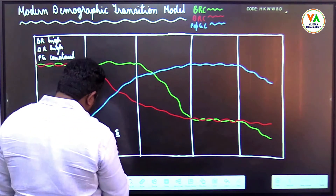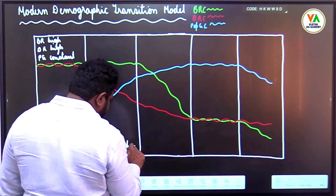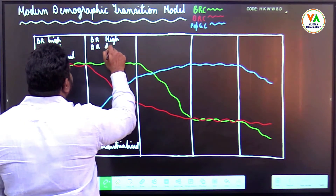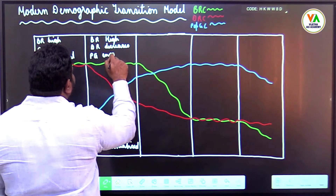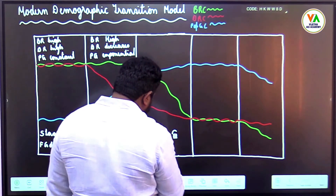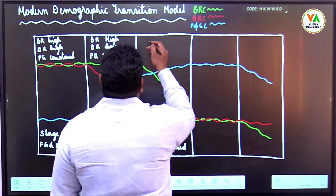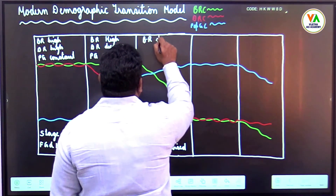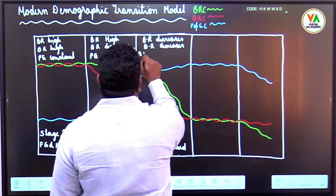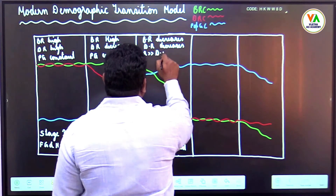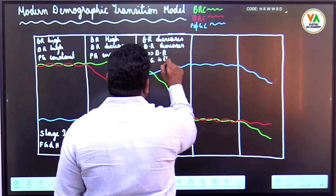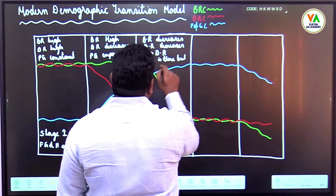This is Stage 2. You can find this in pre-industrialized societies — birth rate high, death rate decreases, population growth exponential. This is Stage 3. You can find it in industrialized societies — birth rate decreases, death rate also decreases but birth rate is more than death rate. Population growth is there but less than Stage 2.